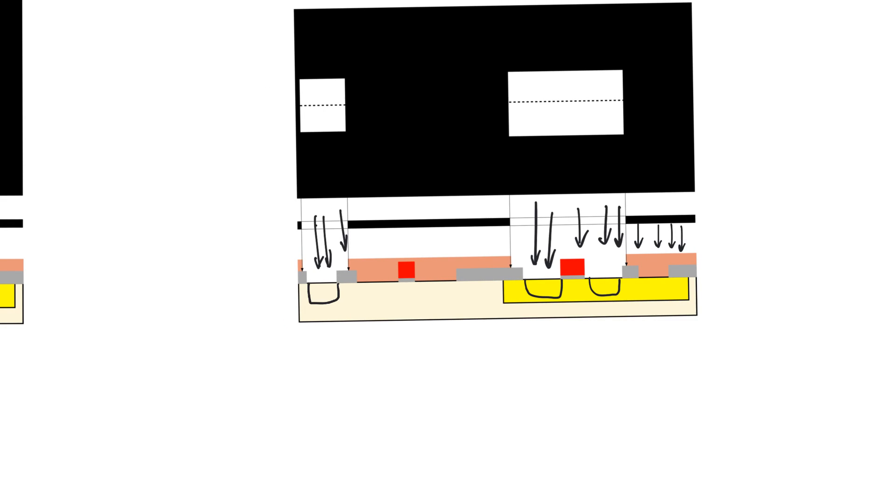Areas within the N-well will have P+ implants, and these areas are going to form the sources and drains of the PMOS transistors. We also have one or more areas outside in the substrate — these will form the contact to ground for the substrate. Notice that the P+ mask does not have to be very precise; it doesn't draw exactly over the areas we want to implant, but it does include those areas.